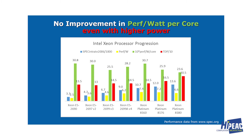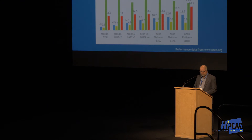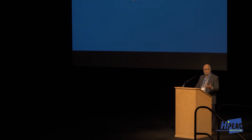Notice that the green bar — performance per watt per core — even with higher power, going from Sandy Bridge in 2012 to last year's Skylake, actually came down. So there's a problem here. We have to think about more energy-efficient cores, and that's what I've spent the last five years of my life at Qualcomm doing — getting cores that are more energy efficient.